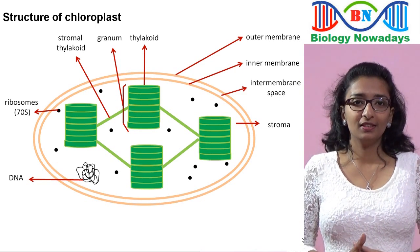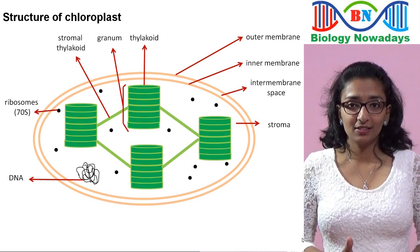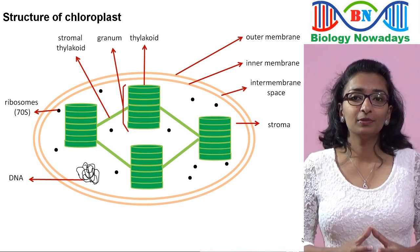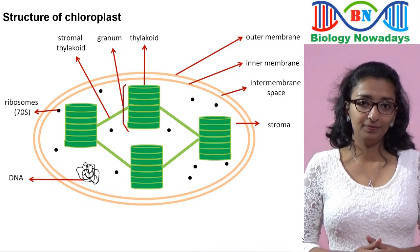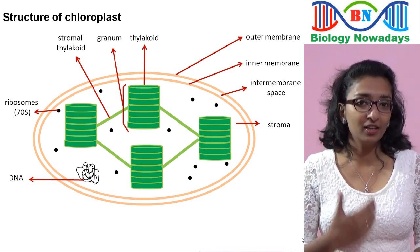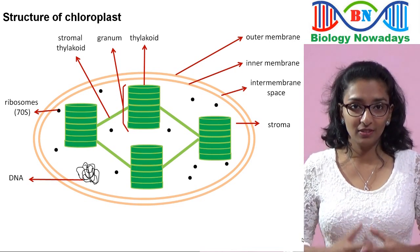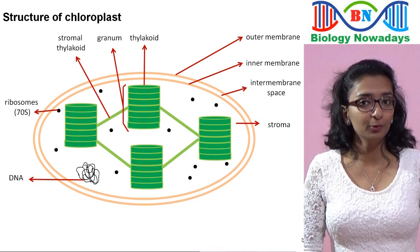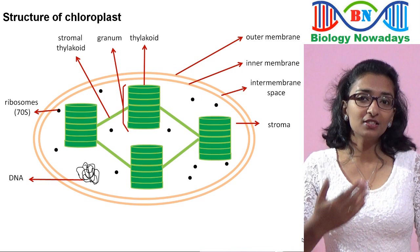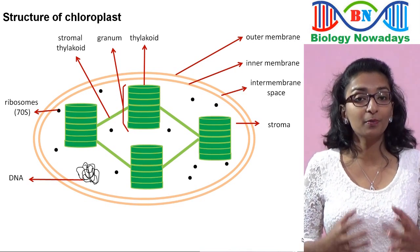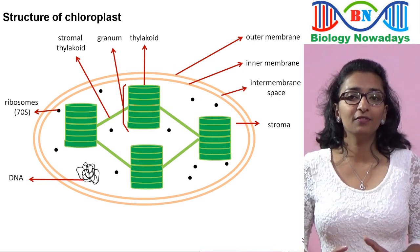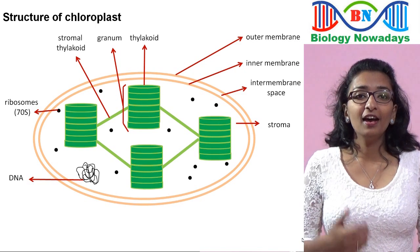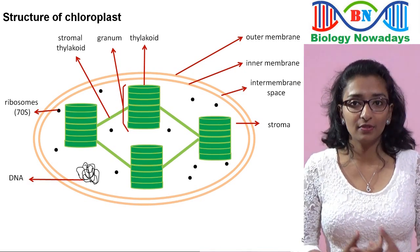According to the endosymbiosis theory, chloroplasts were once photosynthetic bacteria — prokaryotes — that got engulfed by a large eukaryotic host cell. The photosynthetic bacteria and the eukaryotic cell then started a symbiotic relationship. The photosynthetic prokaryotes provided important nutrients to the host cell, and in turn received protection and a steady environment to live in. Since chloroplasts were once photosynthetic bacteria, they have their own DNA and prokaryotic 70S ribosomes.